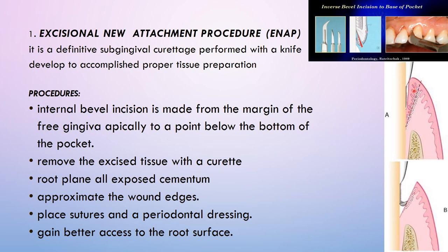For ENAP, after the internal bevel incision and tissue removal, the root surfaces are planed with all exposed cementum addressed, and the wound edges are approximated. Suture placement and periodontal dressing may be applied if needed. The main advantage of ENAP is that it gives better access to the root surface for root planing.